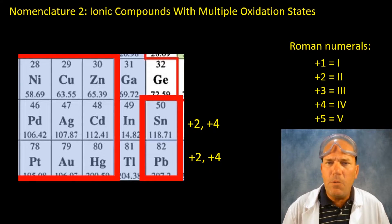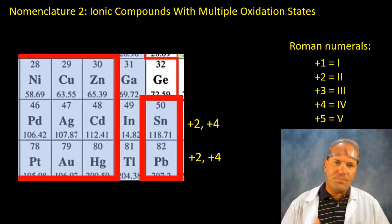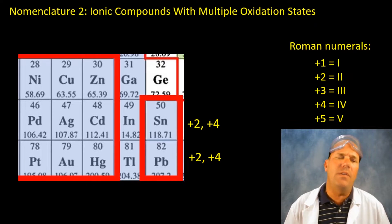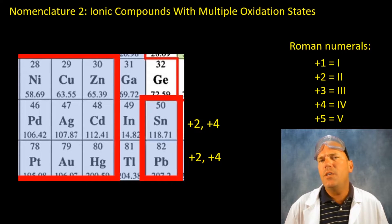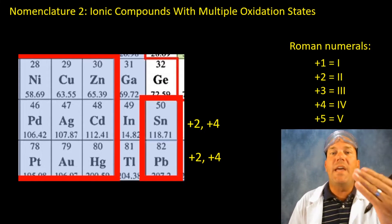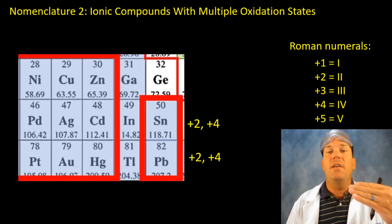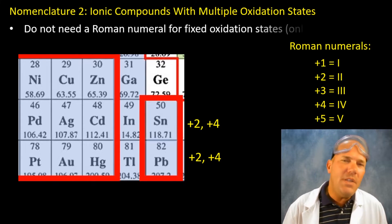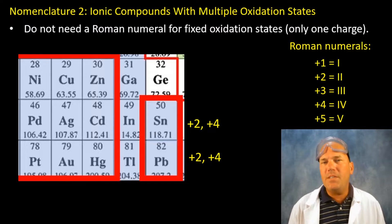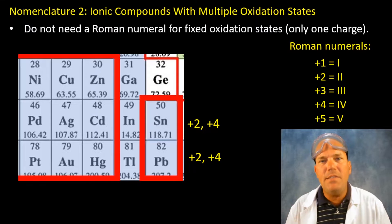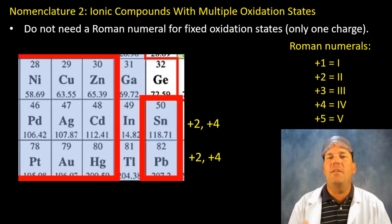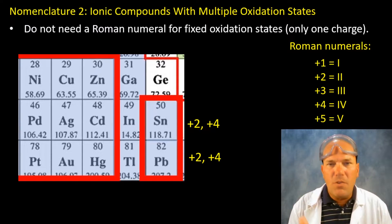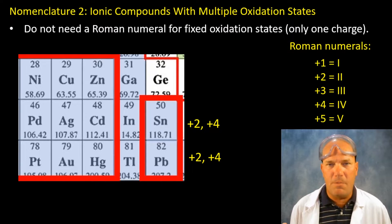So you need to really be aware of that. When we're naming or writing compounds with tin or lead we need to use roman numerals or say lead two or tin four. And we don't need roman numerals for fixed oxidation states as I just got done mentioning and in nomenclature one we didn't use them.